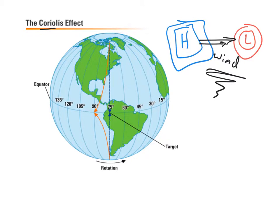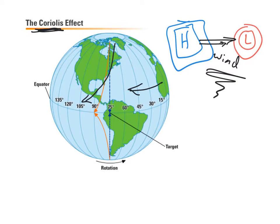Remember the Coriolis effect: because the earth is spinning, something not attached to the surface — like water currents or wind — experiences a bending effect. In the northern hemisphere it bends to the right due to earth's rotation, so a wind blowing from the north pole toward the equator would bend to the right. In the southern hemisphere it's the opposite, bending to the left. This is how we get a change in the winds.